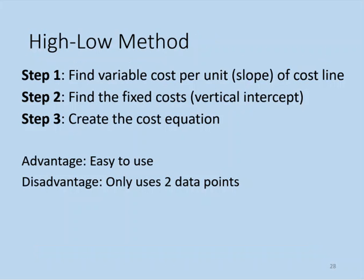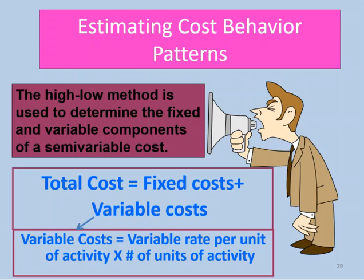The next method is the high-low method, which is an easy way to estimate the variable and fixed cost components of a mixed cost. There are three steps: first, find the variable cost per unit (the slope); second, find the fixed cost (the vertical intercept); and third, create the cost equation. One major drawback is that it only uses two data points — the highest and the lowest — so the line might not be representative of all other months.